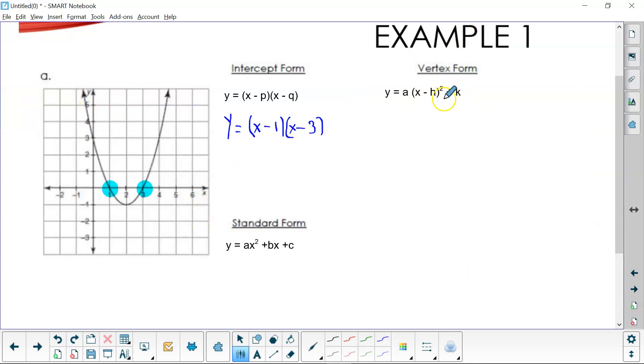So now we go back, let's look at vertex form. Now in vertex form, let's find our vertex. There's our vertex, looks like it's at (2, -1).